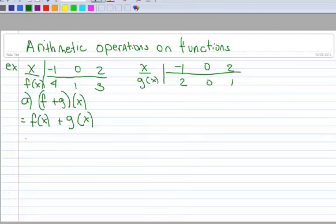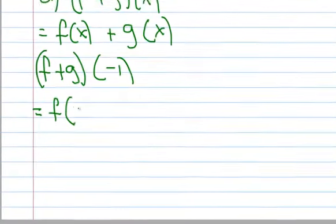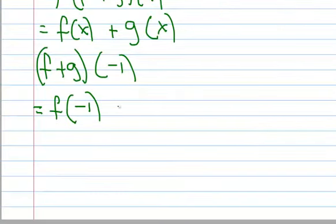So in this particular example, we want to find f plus g at the value negative 1. So this really means I evaluate the function f of x at negative 1, and I evaluate the function g of x at negative 1, and then I add them together.